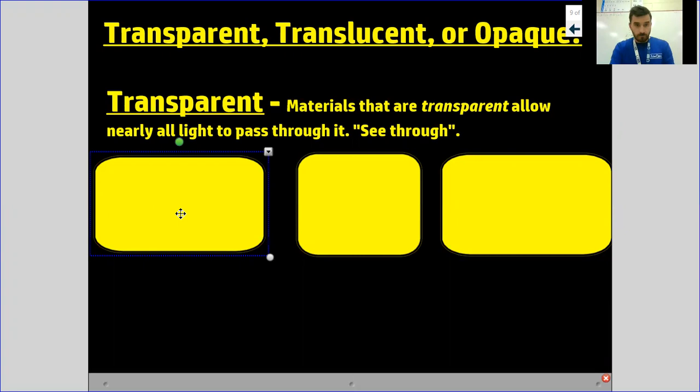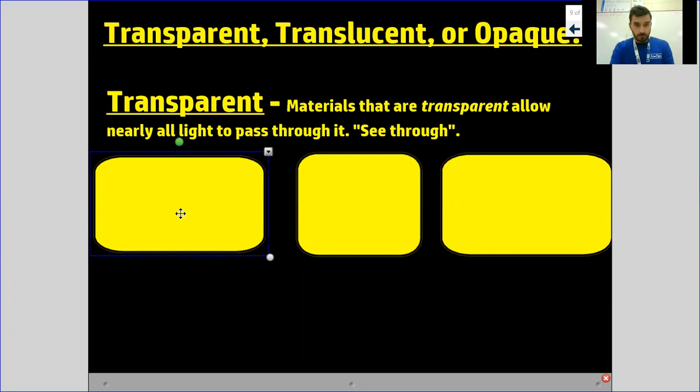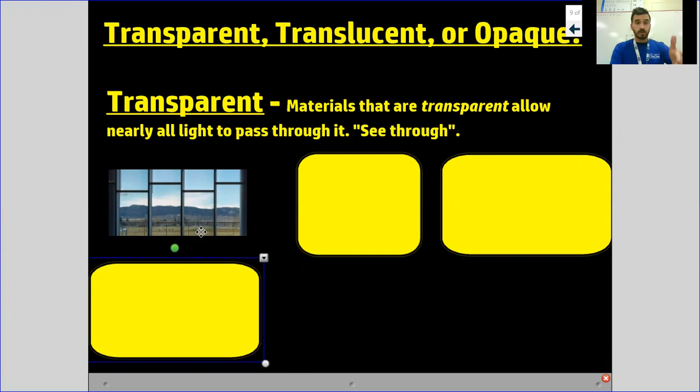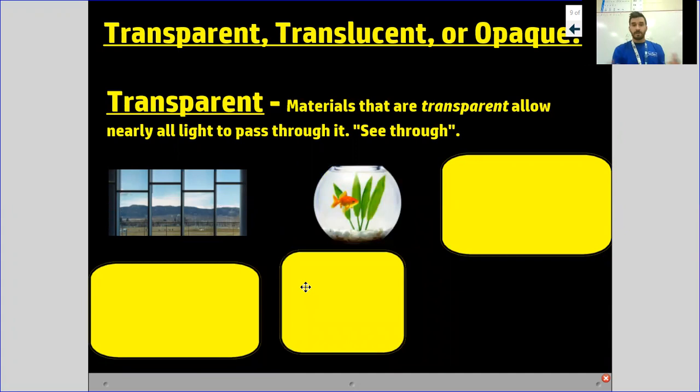A couple of examples: that window in your living room where you can clearly see the mountains out ahead — that window could be transparent. And a fishbowl — if you've got a fishbowl with water and a goldfish in there, you are clearly able to look through that bowl into that water and see your fish. It's transparent because all that light travels through and you can see through that glass.